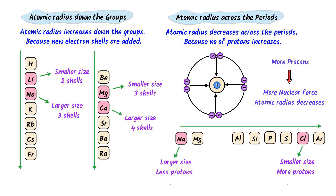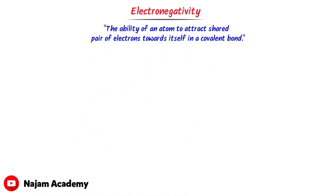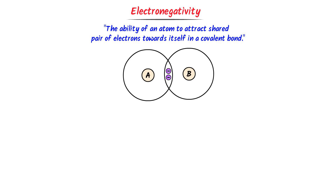Now we will learn the periodic trends of electronegativity. By electronegativity, I mean the ability of an atom to attract a shared pair of electrons towards itself in a covalent bond. For example, consider two atoms A and B — let them both mutually share one pair of electrons to form a covalent bond. Let atom A pull this pair of electrons more towards itself while atom B pulls the shared pair less towards itself, so atom A is more electronegative.